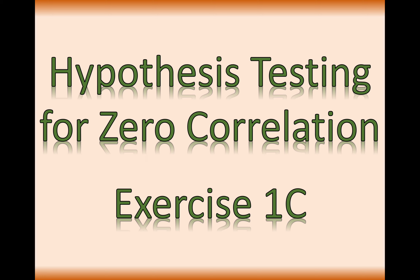What we're effectively doing in this chapter is having a look at that PMCC value and deciding: is it high enough, or potentially negative enough, for us to say yes there is correlation in this data, or no there is no correlation. It also matters how much data we have, so the value at which we're going to accept correlation is dependent upon the size of our data set.